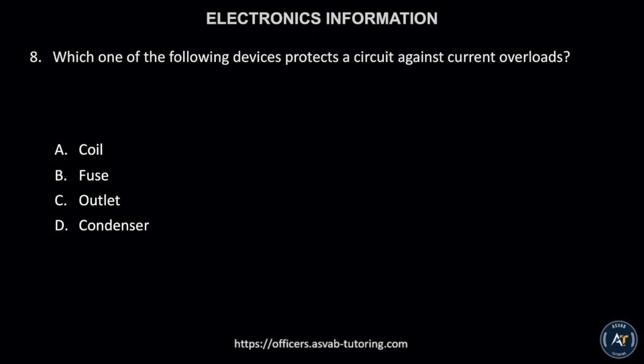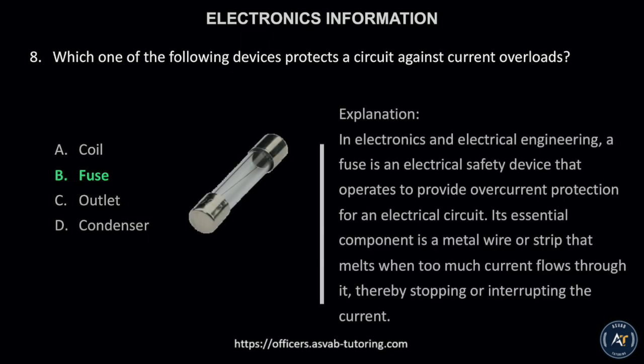Number 8. Which one of the following devices protects a circuit against current overloads: A. Coil, B. Fuse, C. Outlet, or D. Condenser? The correct answer is letter B, fuse. In electronics and electrical engineering, a fuse is an electrical safety device that operates to provide overcurrent protection. Its essential component is a metal wire or strip that melts when too much current flows through it, thereby stopping or interrupting the current.